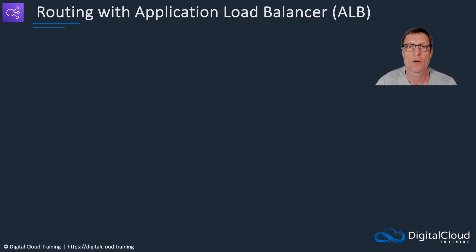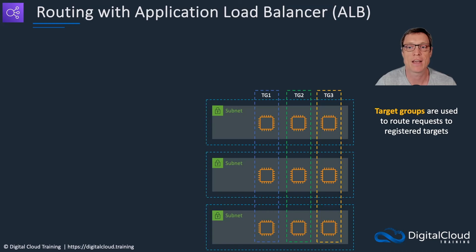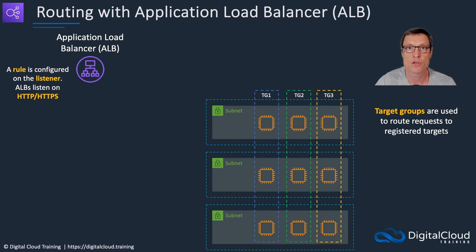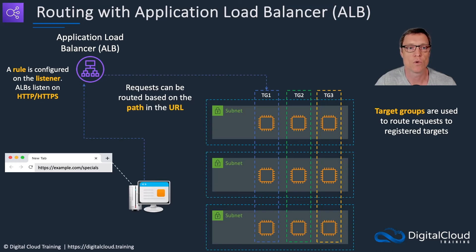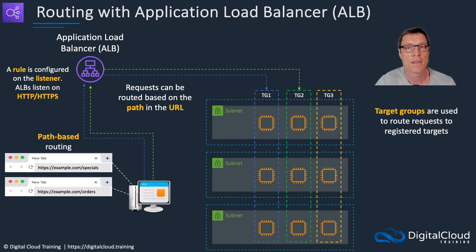Now let's look at advanced request routing with the ALB. We have instances across multiple AZs organized into different target groups, which are used to route requests through to specific instances that may be running different components of an application. The load balancer has a listener and ALBs listen on HTTP or HTTPS. With path-based routing, we can specify rules that look at the URL path. Since the ALB is a layer seven load balancer, it can inspect information in the HTTP header at layer seven, including the path. So we can route requests to different target groups based on the path — for example, example.com/specials or /orders going to different target groups representing different components of our application.